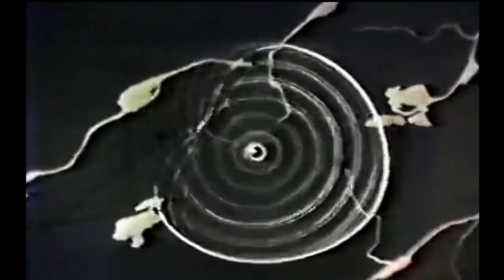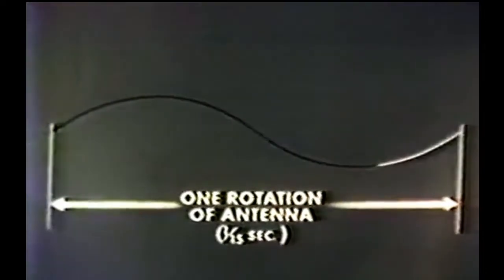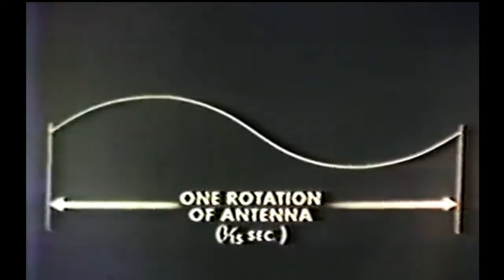Now, the signals each aircraft receives are continually going through complete cycles of amplitude from maximum to minimum. Since the reflector rotates 15 times a second, there are 15 complete cycles a second of amplitude modulation, as this oscilloscope representation shows. During one rotation of the antenna, one-fifteenth of a second, there is one complete cycle of this 15 cycle amplitude modulation.